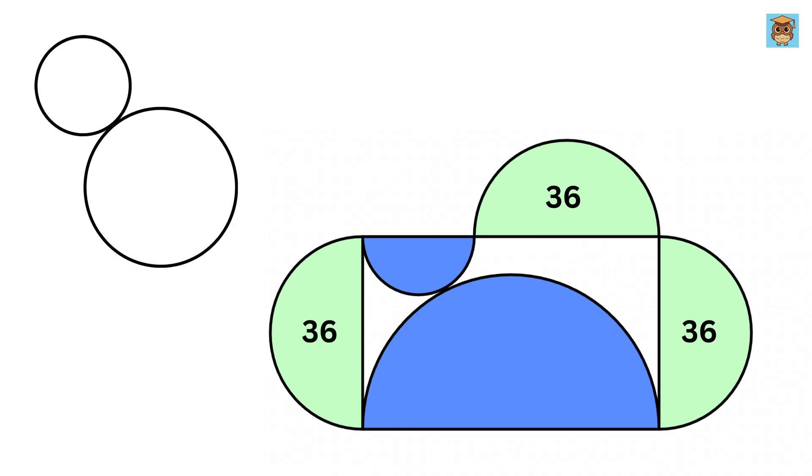Assume we have two circles externally touching each other like this. Now, if we draw a line connecting their centers, then the line will also pass through their point of contact like this.